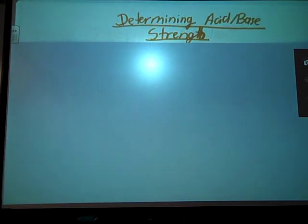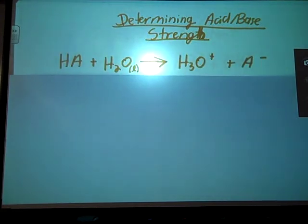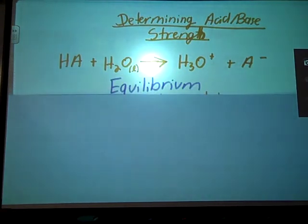Alright, so now we're going to talk about how we can numerically determine the strength of an acid or a base. Now, contrary to popular opinion, reactions don't just go forward and continue to do so. There's actually what's called an equilibrium between the reactants and products sides of my equation.